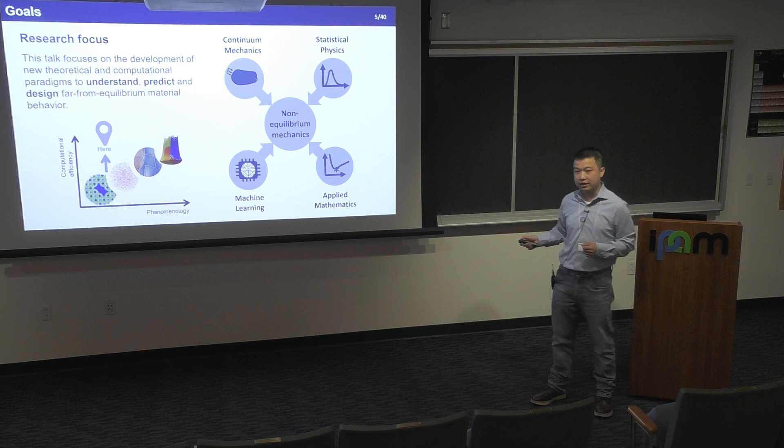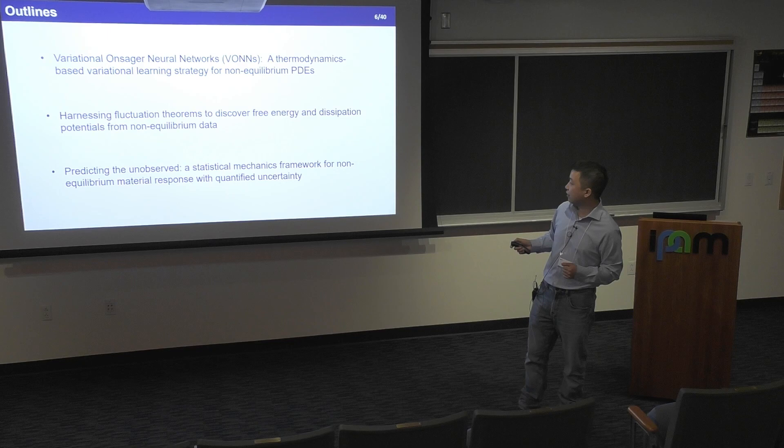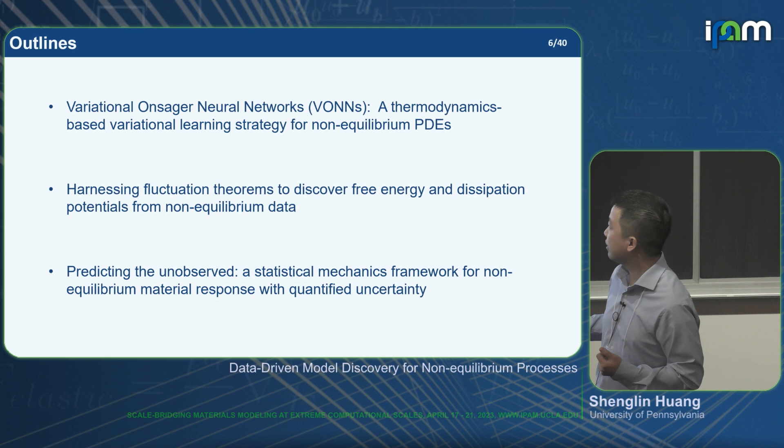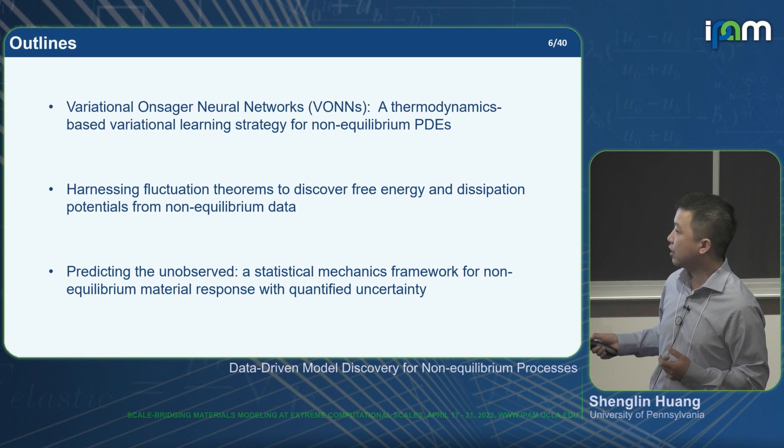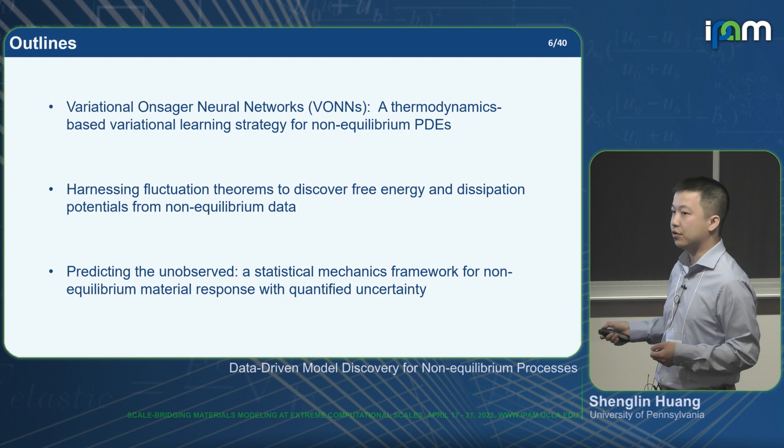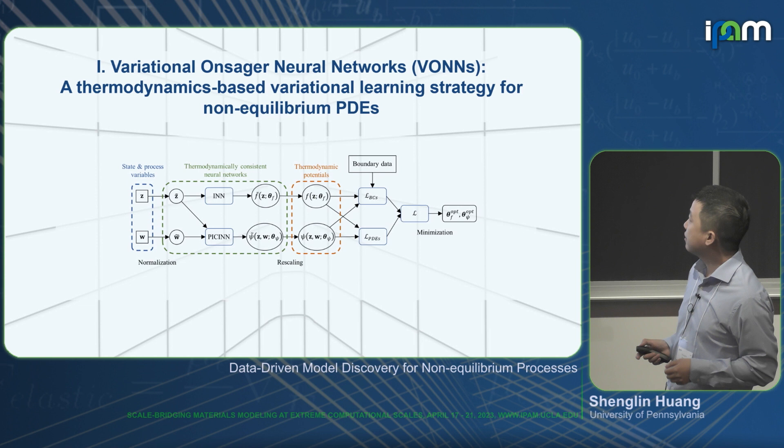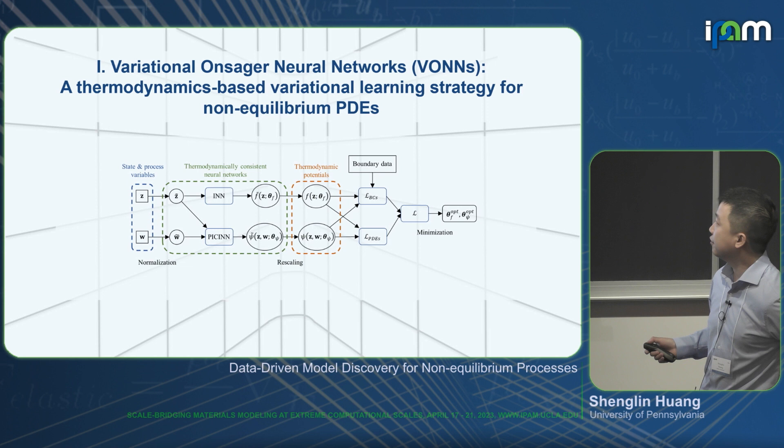I'll talk about three recent works. The first is using machine learning techniques to discover non-equilibrium PDEs. The second and third use the stochasticity of small-scale systems to harness continuum-level material response. The first work is called variational Onsager neural network — what we call FONNS — a thermodynamic-based variational learning strategy for learning non-equilibrium PDEs.